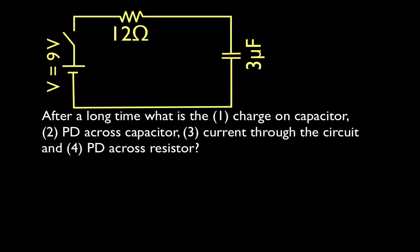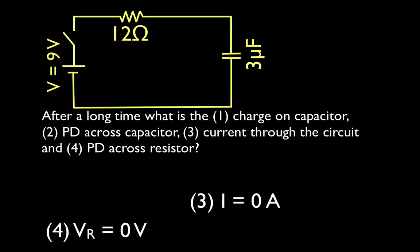We're going to answer these out of order, starting with current. After the capacitor is charged, after a long time, there's no current flowing in the circuit, so the current is zero amps. And if there's no current flowing through the circuit, using V equals I times R with I equals zero, that means V is equal to zero — there's no voltage drop across the resistor. So where is all that voltage? The voltage is now on the capacitor. At time equals infinity, the voltage on the capacitor is equal to the voltage of the battery.